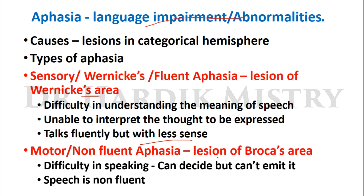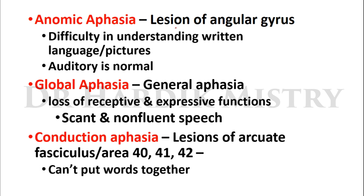Motor or non-fluent aphasia occurs with lesions of Broca's area, which forms the motor aspect of speech and is the main center for word formation. Although the Wernicke's area is normal and sends information to Broca's area, that area is damaged. The patient can understand the meaning of speech but cannot execute the motor aspect — they can decide what to say but cannot emit it, so speech is non-fluent. Anomic aphasia results from lesion of the angular gyrus, causing difficulty understanding written language and pictures, while auditory information processing is normal.